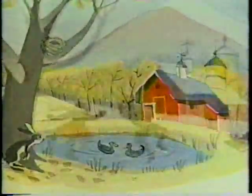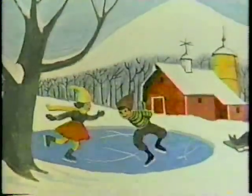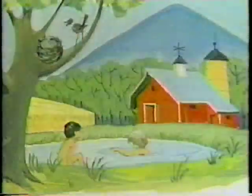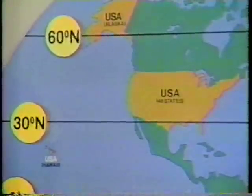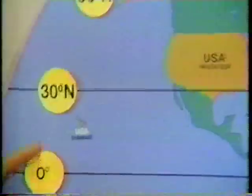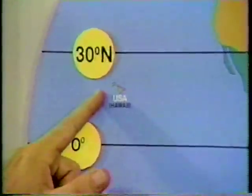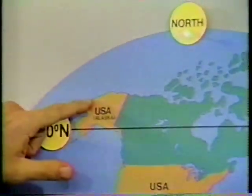Hence, the middle latitudes become regions of seasonal change, experiencing fall, winter, spring, and summer. Where do we live? Where is the United States of America in relationship to the low, middle, and high latitudes? Well, actually, we're in all three, although most of our country is right here — 48 of our 50 states lie almost completely within the middle latitudes. Our state of Hawaii is in the northern part of the low latitudes, while most of Alaska is in the high latitudes.